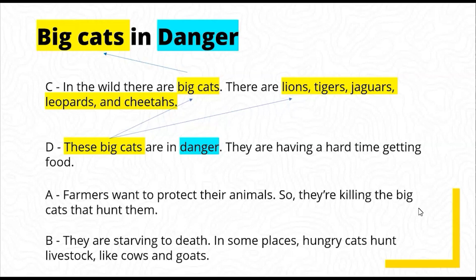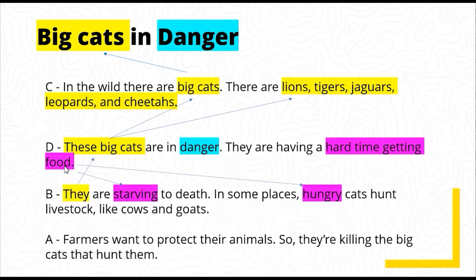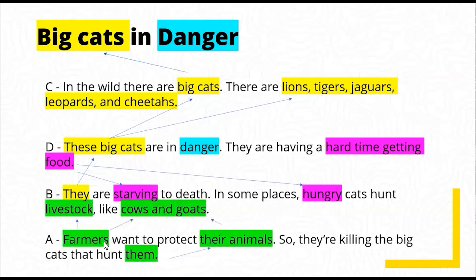We can show that food has a thematic link with hungry and starving. At the end of the next sentence we learn about livestock — cows and goats. And in the following sentence we have farmers protecting their animals. We can show that farmers links to livestock, with cows and goats, and 'them' links to animals. This sentence cut-up activity is really great for focusing on paragraph structure — especially how to link sentences and ideas together, and how to reference. It's all about coherence and cohesion, and really useful for preparing students to write their own paragraphs.